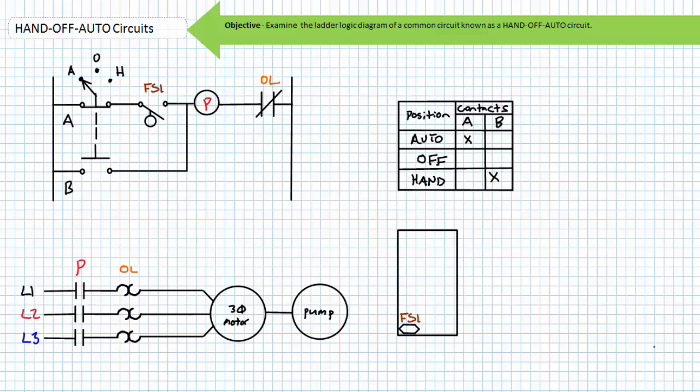When the selector switch is in the auto position, the pump motor will run when the float switch closes. The overloads serve to protect the pump motor from sustained overload conditions.